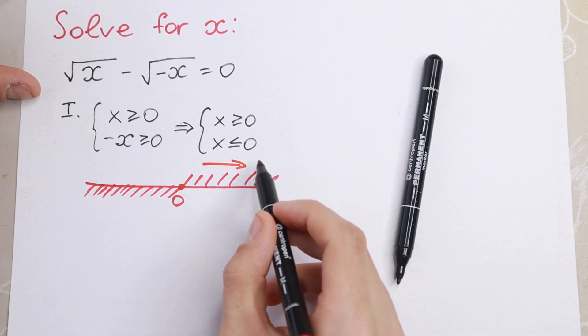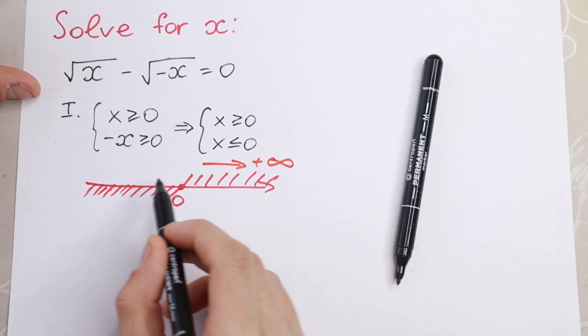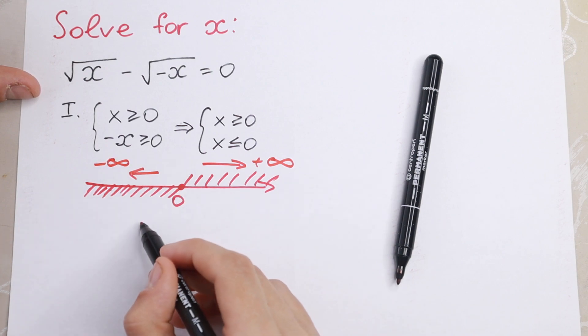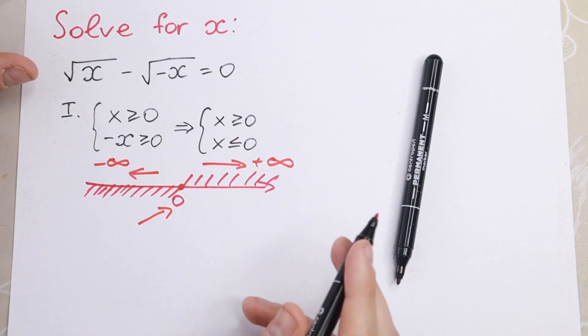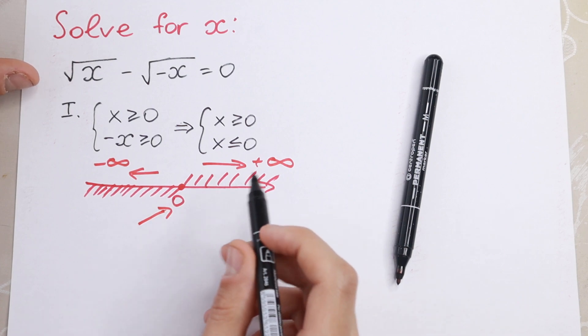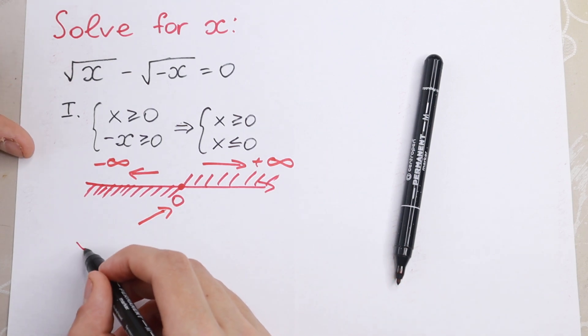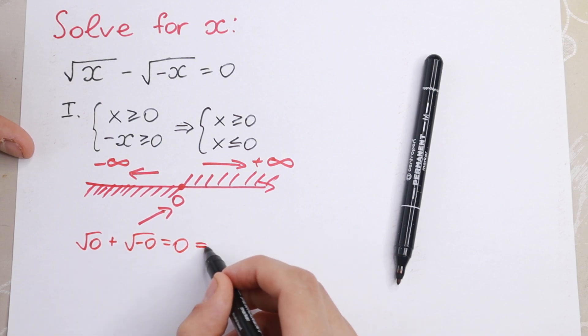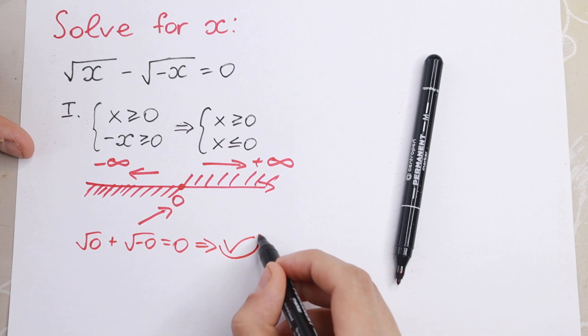Right here, this goes to plus infinity, right here to minus infinity, and one common point is this 0. So x is equal to 0 will be our solution. Let's check it. So square root of 0 plus square root of minus 0 equal to 0, which is good, which is correct.